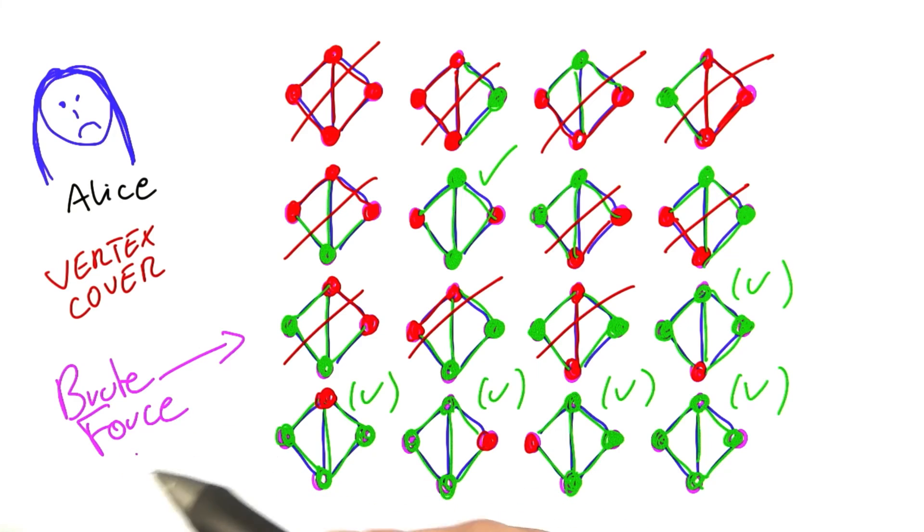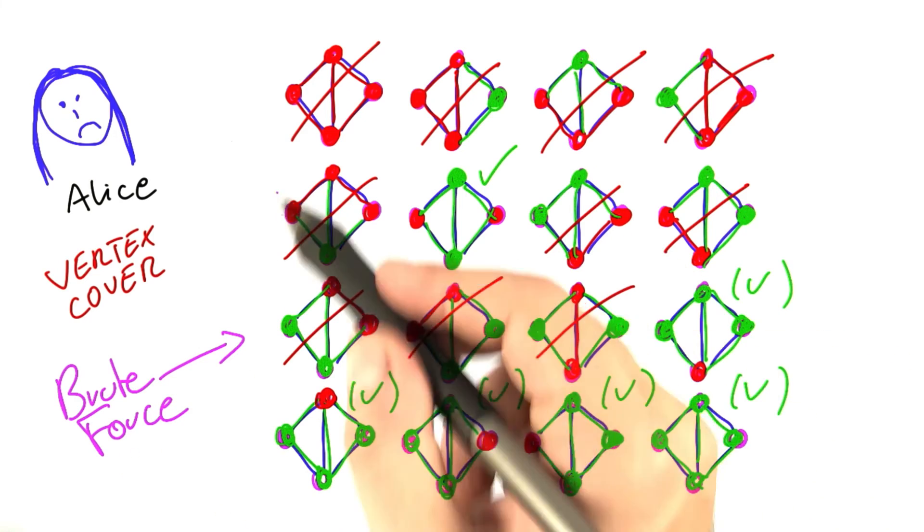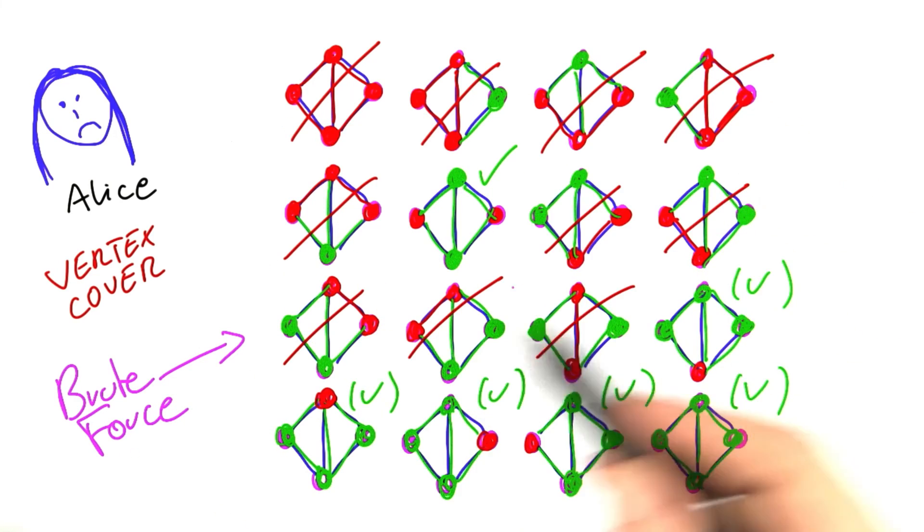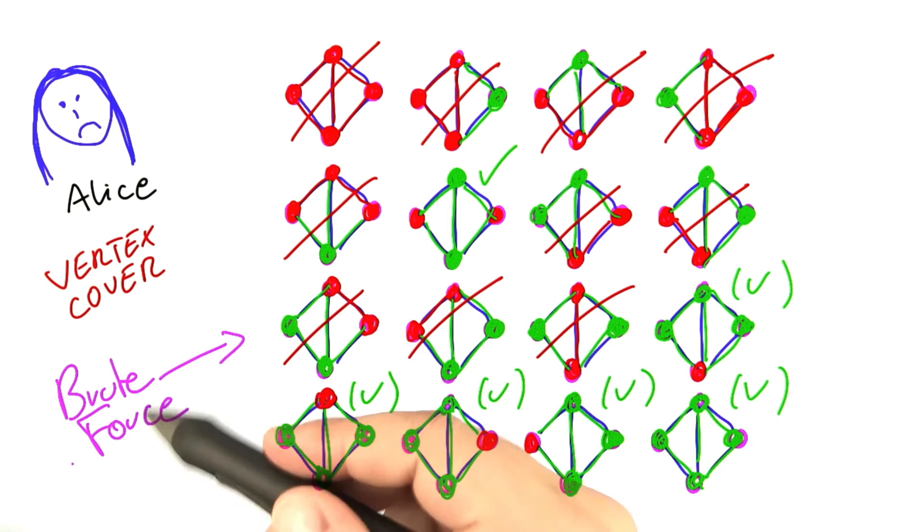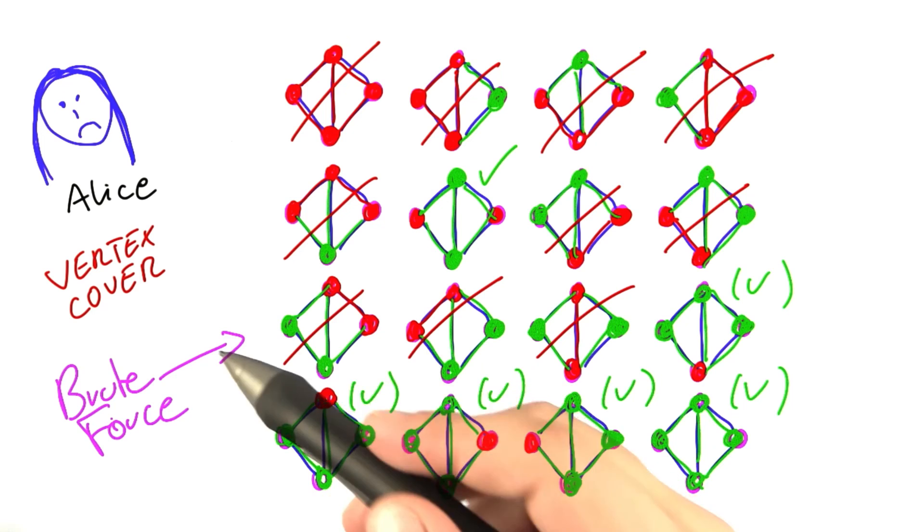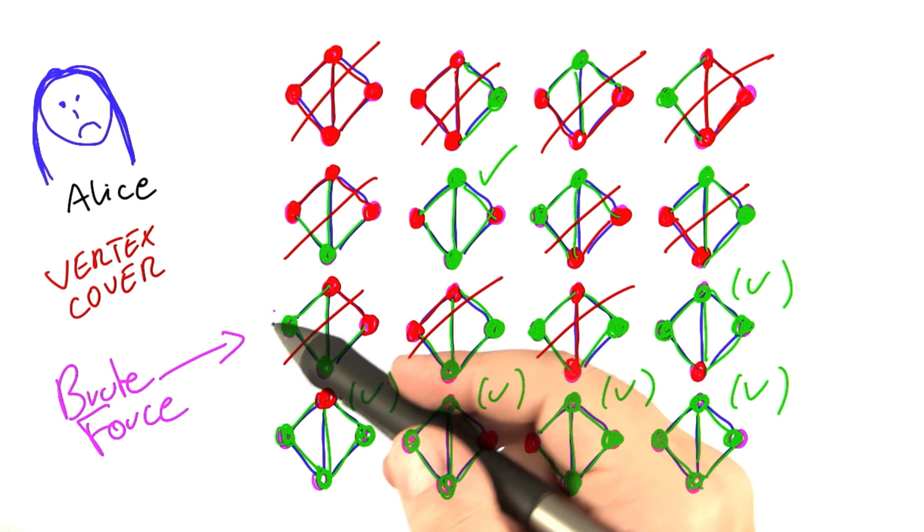And that is the difference between brute force and intelligent force. In brute force, we go through all of the possible assignments of the vertices into the VertexCover or out of the VertexCover, whereas what we're now going to do is we're going to avoid stupid choices. And that is the basis for intelligent force.